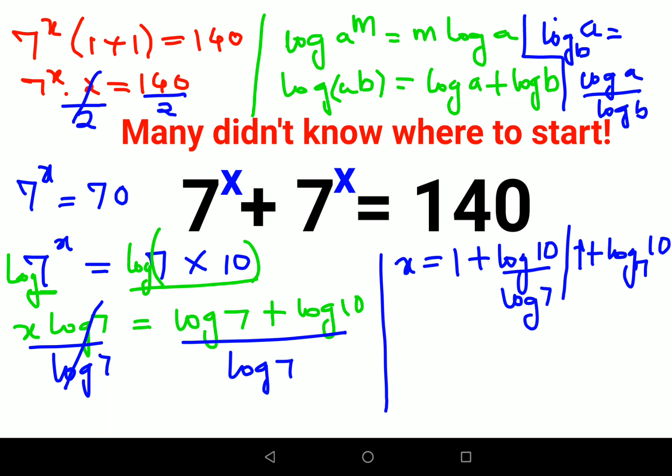Now these are the two answers which can be worked out if they have not provided you with the log book. But if in case they have given you the log book, you can do this further. This is 1 and log 10 is always 1. Now log of 7 is 0.845. So this comes out to be 1 plus 1 upon 0.845 comes out to be 1.183. So the final answer, the value of x comes out to be 2.183.